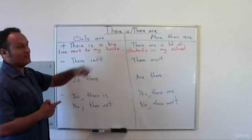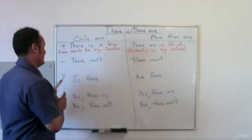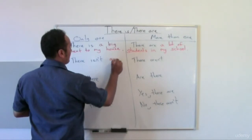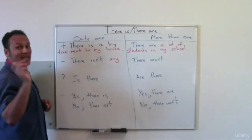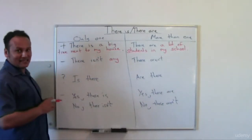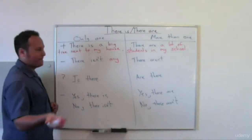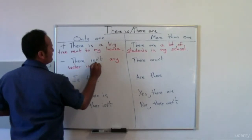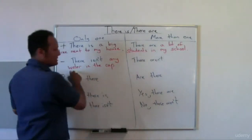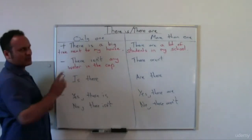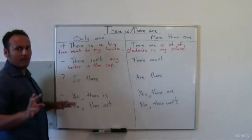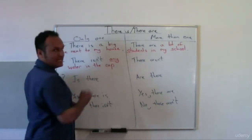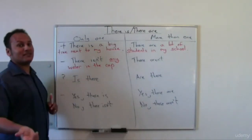What about the negative? We use 'any' in the negative. For example: 'There isn't any water in the cup.' Water — you cannot count it; you can't say one water, two water. So it's treated as singular. And in the negative, we like to use 'any' — it's an extra word to use, but it's very good.